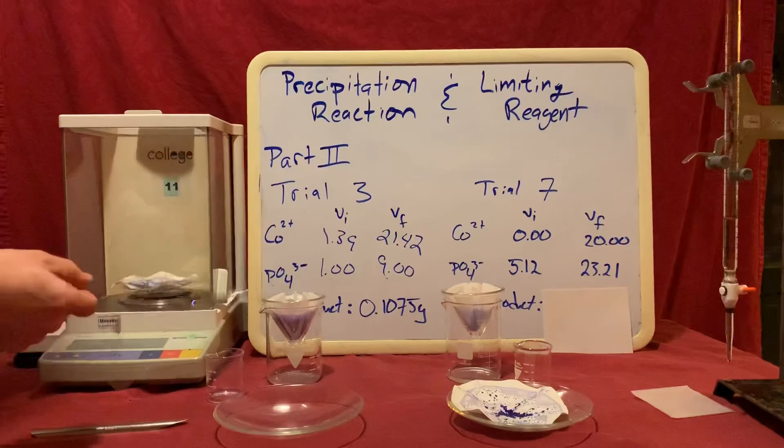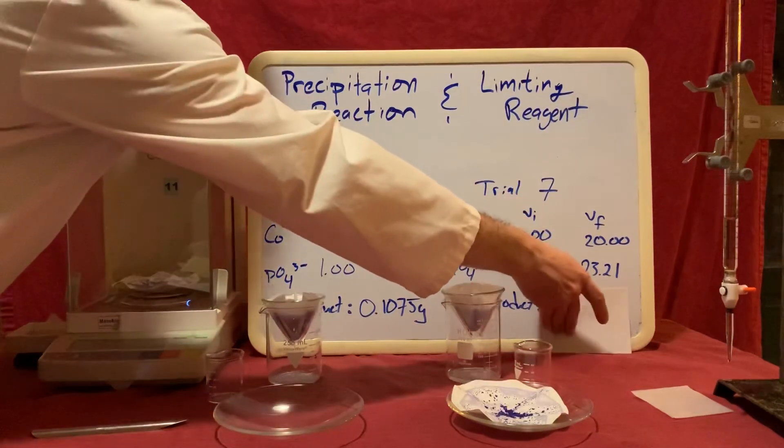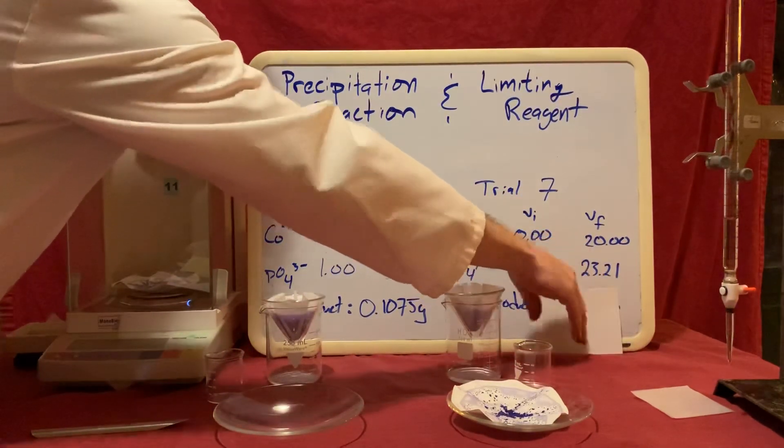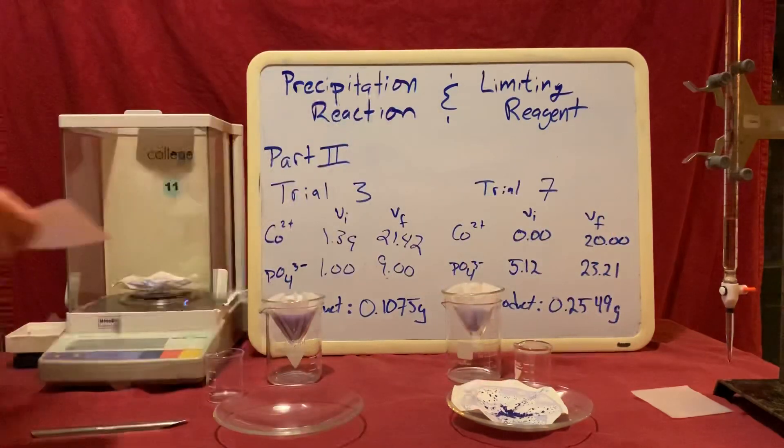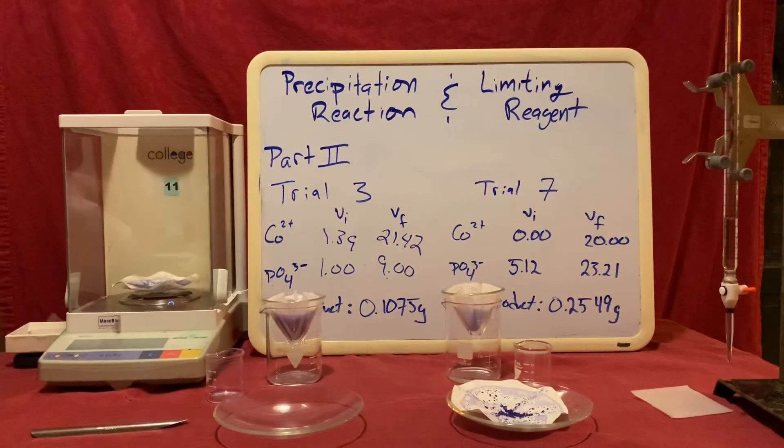In the case of my trial 7, I had a yield of 0.2549 grams. I can compare both of these isolated yields to the theoretical yield that I can predict based on my initial volumes of each of my substances.